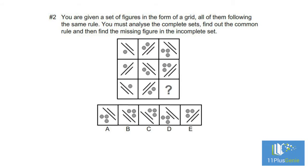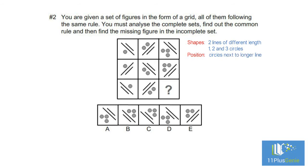Example number two: you are given a set of figures in the form of a grid, all of them following the same rule. You must analyze the complete sets, find out the common rule, and then find the missing figure in the incomplete set. Row one shapes: in each row we have two lines, and the number of circles increases by one from left to right. The circles are always situated next to the longer line.